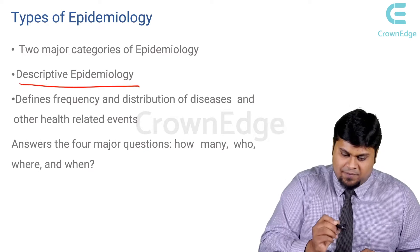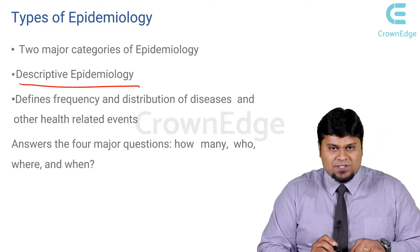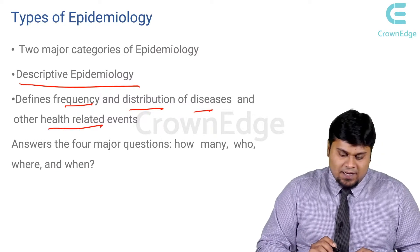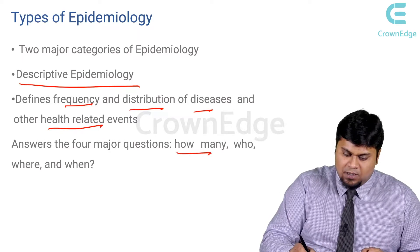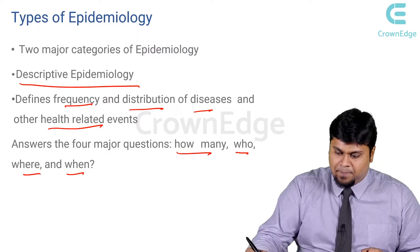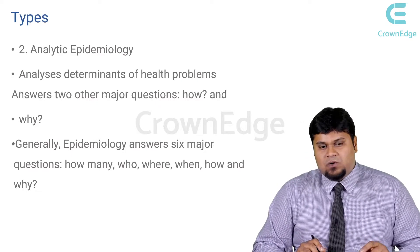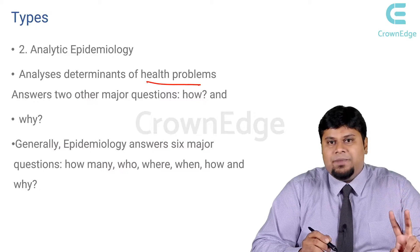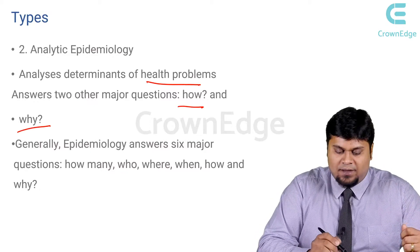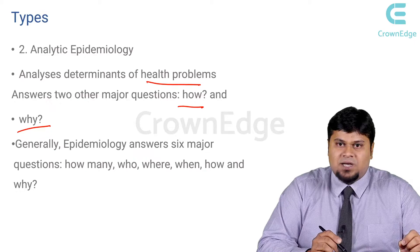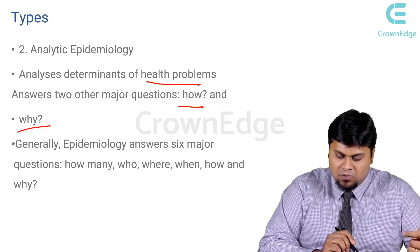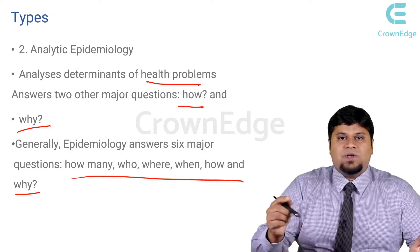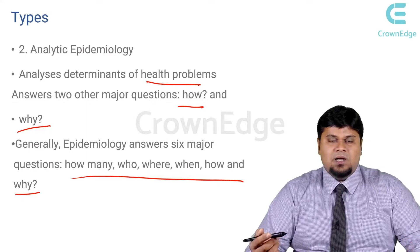Now there are two major categories of epidemiology. Descriptive epidemiology tries to describe the health status and is usually restricted to the frequency and distribution of diseases and health-related events. It answers four major questions: how many, who, where, and when. Analytical epidemiology goes one step higher and analyzes the determinants of health problems, answering two other major questions: how and why. So generally, epidemiology answers six major questions: how many, who, where, when, how, and why.